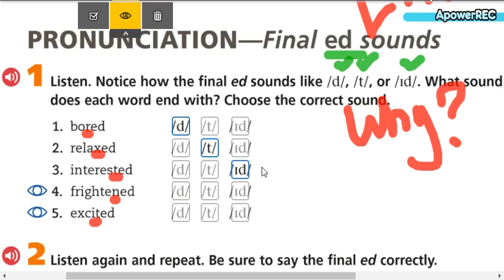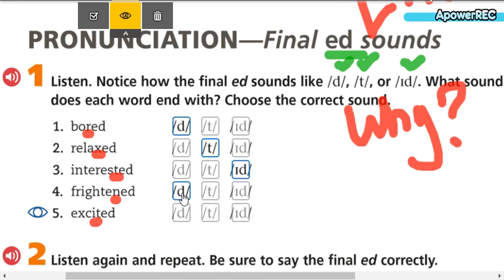Esto termina en T, por lo tanto, es id. Esto termina en N. D, sonido de D. Y esto termina en sonido de la T. Entonces, es id.